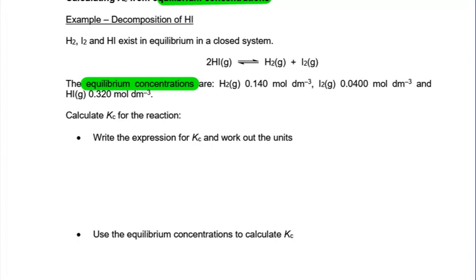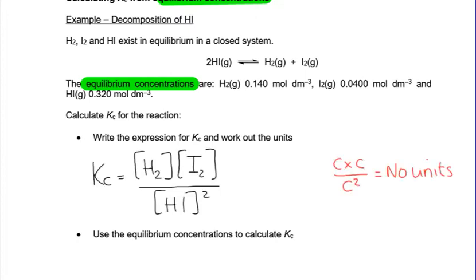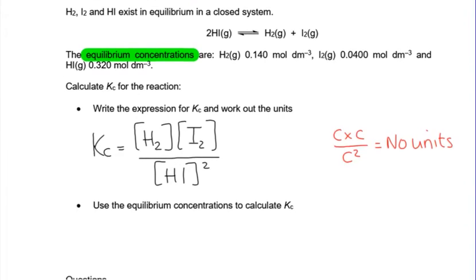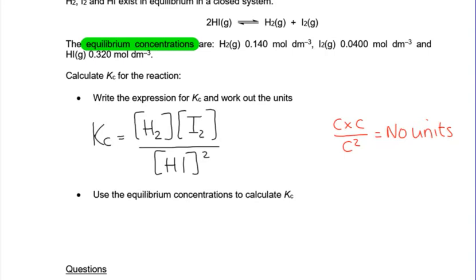So can you pause the video and write an expression for Kc and work out the units? So if you've managed that, you should have written that. What would the exam board be looking for? One, that you've used square brackets. So if they're not squared, if they're round in any way, they will lose the mark. And then you can't just leave it blank and assume that the exam board know that you know there's no units. You need to state the obvious. There are no units. If you don't write it, they'll just assume you couldn't do it.